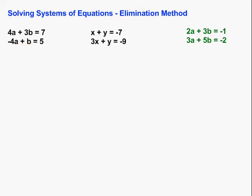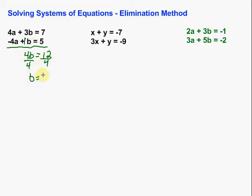In this first one, the 4a and the minus 4a are going to cancel out, so we have no a's. Then we've got 3b plus b, which is just 1b — if there's no number in front of the variable, there's 1. So 3b's and 1b's gives us a total of 4b. That's going to be equal to 7 plus 5, which is 12. We get b by itself by dividing by 4 on both sides, so we're left with b equals 3.